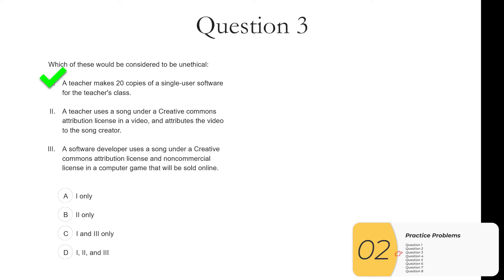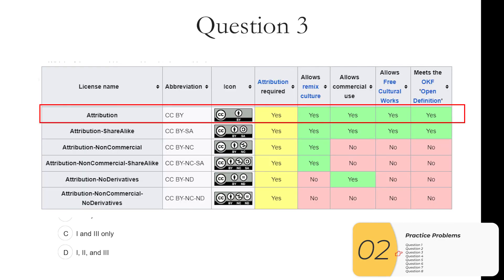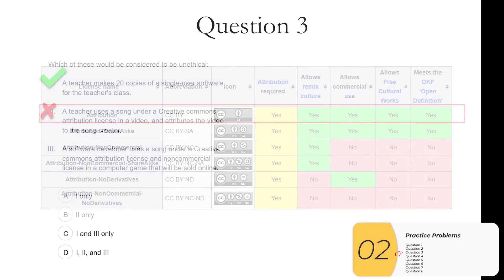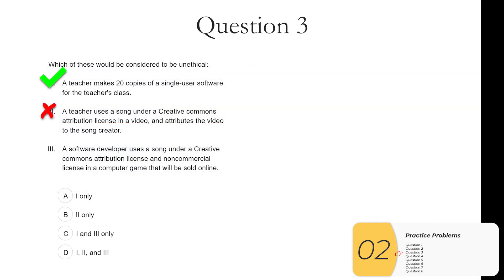Two. A teacher uses a song under a Creative Commons attribution license in a video and attributes the video to the song creator. So this is exactly what the license allows us to do. And so this is not unethical and it is not what we are looking for. There is a trick here that I'm going to mention really quick. An attribution license still allows for commercial use. So just keep that in mind. And three. A software developer uses a song under a Creative Commons attribution and non-commercial license in a computer game that will be sold online. So the non-commercial part of this is going to ban the selling online. And so this one is unethical and again it is what we are looking for. So one and three are unethical and the answer then is C.